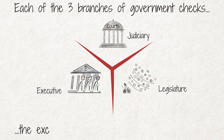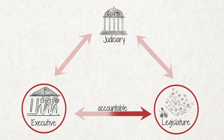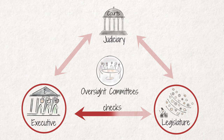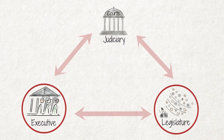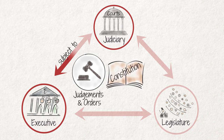Each of the three branches of government checks the exercise of power of the other branches. The national executive is firstly accountable to parliament. Parliament oversees the exercise of power and the work of the executive and checks that departments spend their money wisely. This control function happens mostly through the work of the National Assembly's oversight committees. Ministers regularly appear before these committees to explain their work to MPs and to justify their departments' decisions and spending. The executive is further subject to the judgments and orders of the judiciary, which can check whether a minister or the president has complied with the constitution and can declare invalid any action that conflicts with any provision in the constitution.